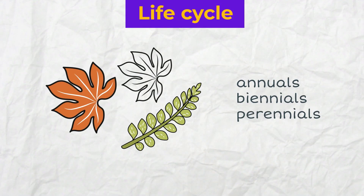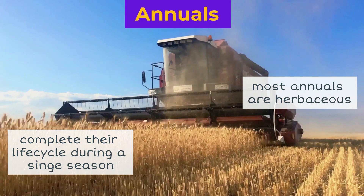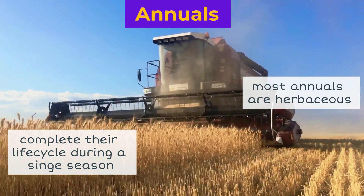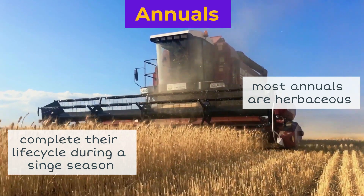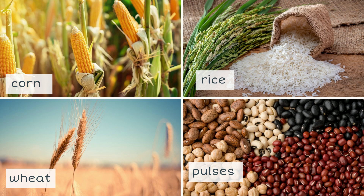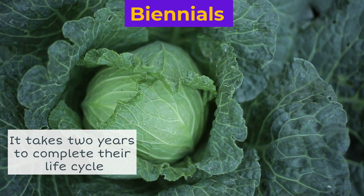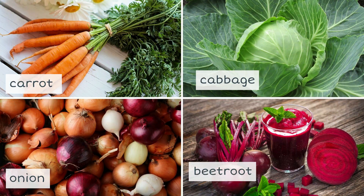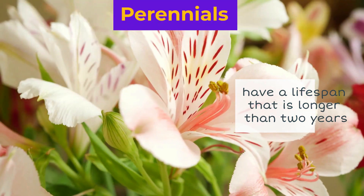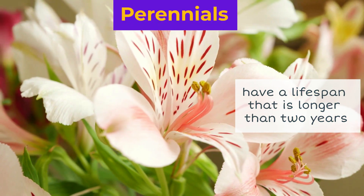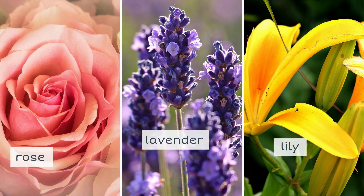By life cycle, plants are commonly classified into annuals, biennials and perennials. Annuals complete their life cycle during a single season. Most annuals are herbaceous — for example, corn, rice, wheat, and pulses. It takes two years for biennials to complete their life cycle, and this group includes carrot, cabbage, onions, and beetroot. Perennials have a lifespan that is longer than two years, like roses, lavender, and lilies.